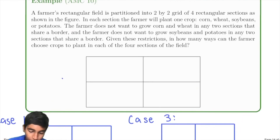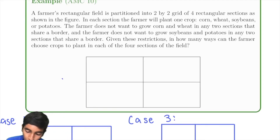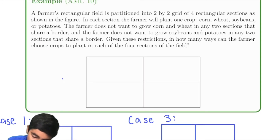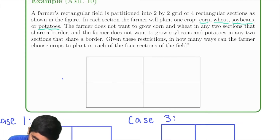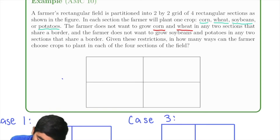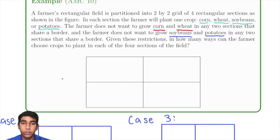Next example: a farmer's rectangular field is partitioned into a 2×2 grid of four rectangular sections. In each section, the farmer will plant one crop — corn, wheat, soybeans, or potatoes. The farmer does not want corn and wheat in any two sections that share a border, and does not want soybeans and potatoes in any two sections that share a border. Given these restrictions, how many ways can the farmer choose crops?